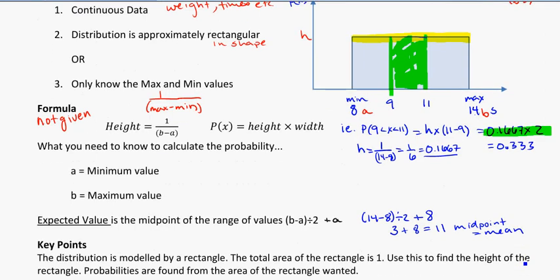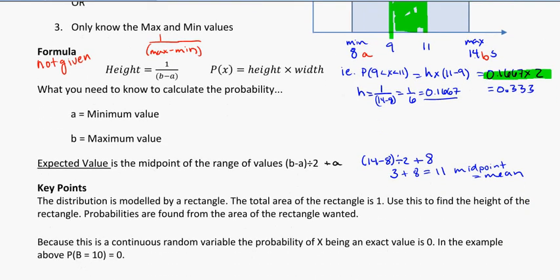So just to recap a few key points for us. The distribution is modeled by a rectangle in shape. The total area will be 1, and we need to use this to find the height of the rectangle. And our probabilities will be found by calculating the area of the rectangles that we're looking for.